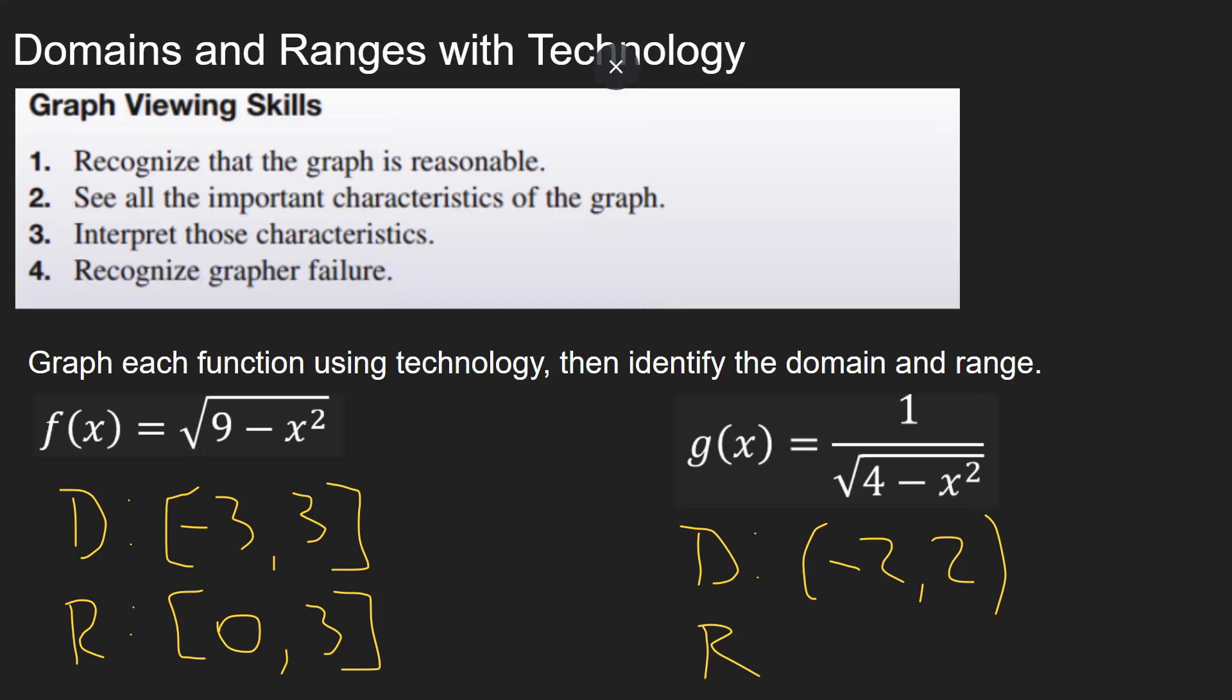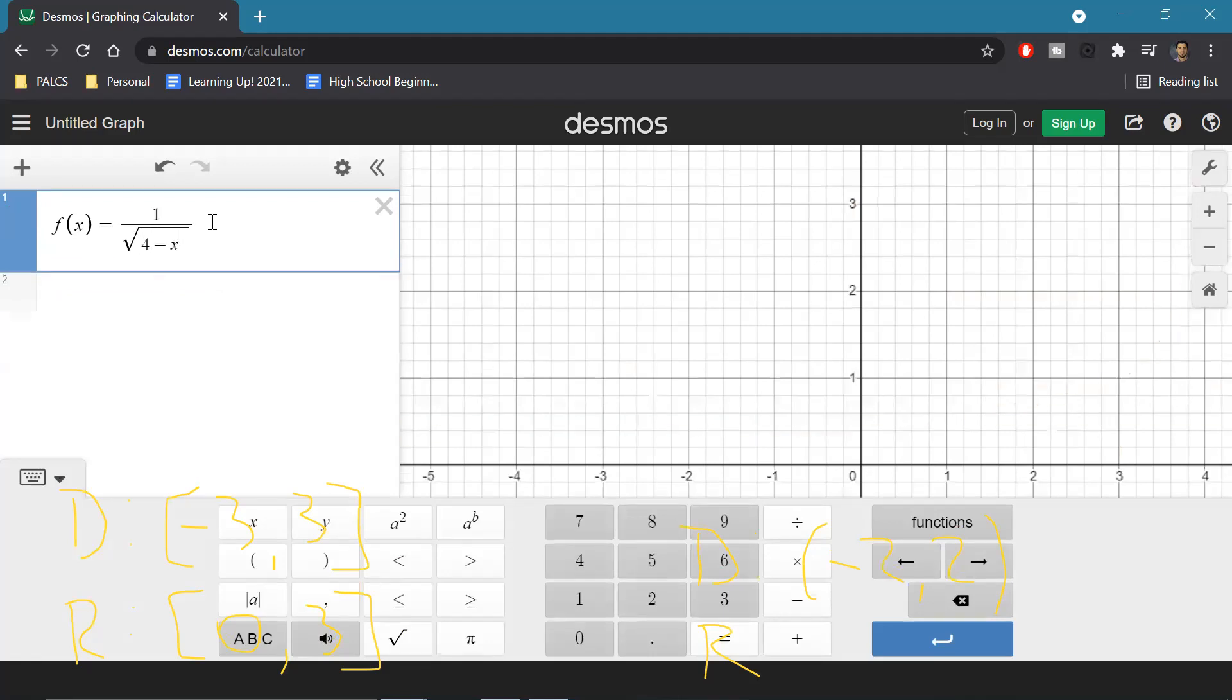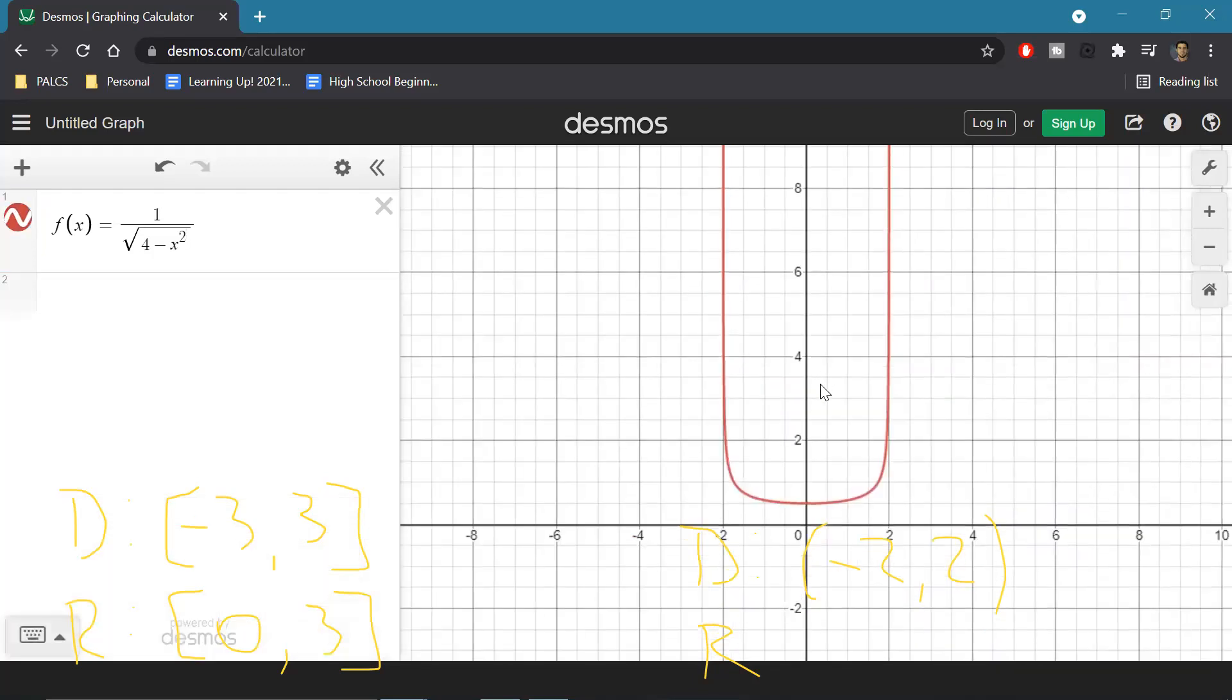And Desmos is actually pretty nice for showing this. So you get one over square root four minus x squared. Go to the home window. And you can see what actually happens is that the graph ends up having vertical asymptotes at two and negative two,